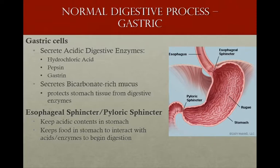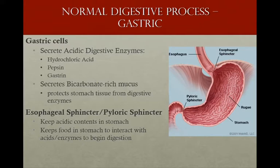Most things cannot live in that environment, and it does break down most things that hit it. Gastric cells secrete hydrochloric acid, and pepsin and gastrin are digestive enzymes. These specialized cells also secrete a bicarbonate-rich mucus that protects the stomach tissue from digestive enzymes. We need bicarbonate in our system to create that mucus coating, keeping the stomach from digesting itself. In low-bicarbonate states or metabolic acidosis, the stomach doesn't get the bicarb it needs.